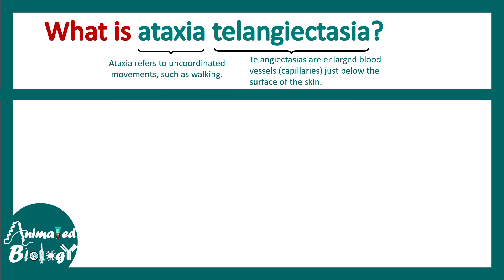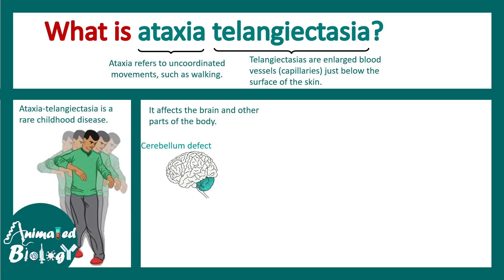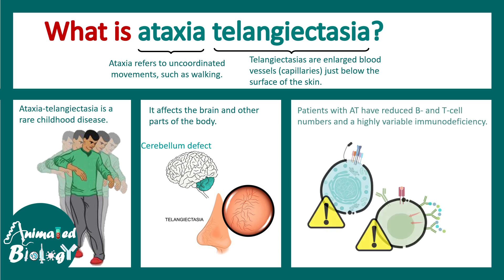In Ataxia, the common symptoms include uncoordinated movement. The part of the body affected is the brain, especially the cerebellum. The spider-like veins and blood vessels are very common in this particular disease. Patients with Ataxia Telangiectasia have reduced B cell and T cell numbers and are highly susceptible to many infections. So this comes under one type of immunodeficiency. In this video we will try to understand why T and B cells are less in number or non-functional.